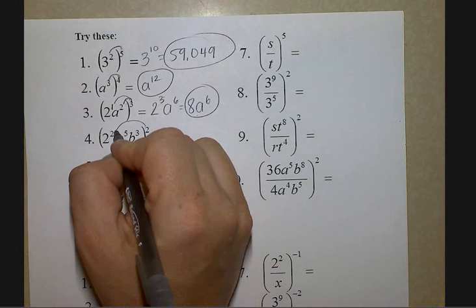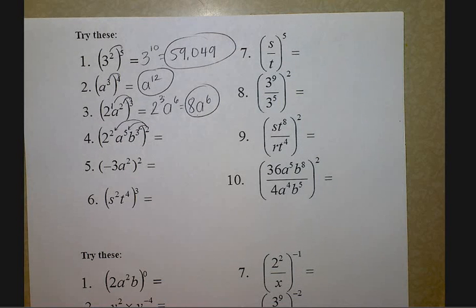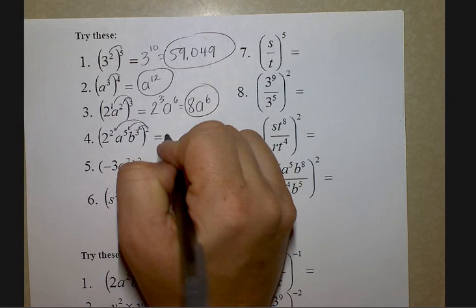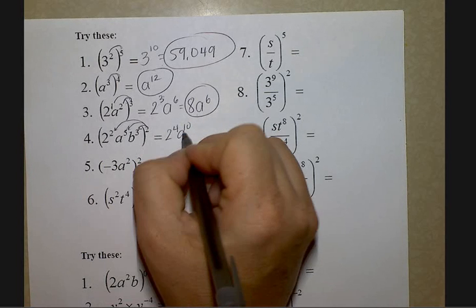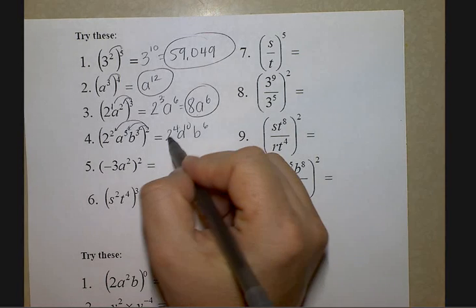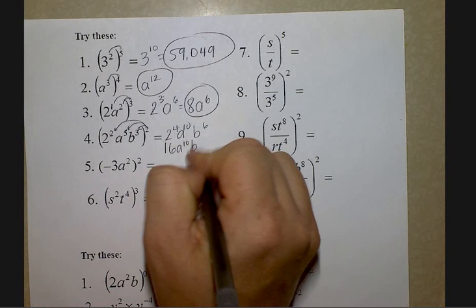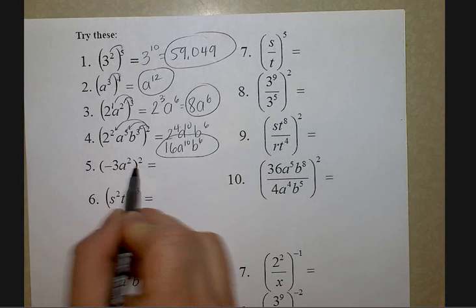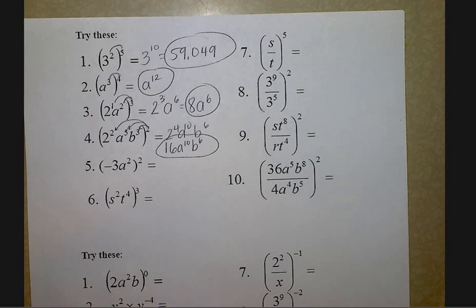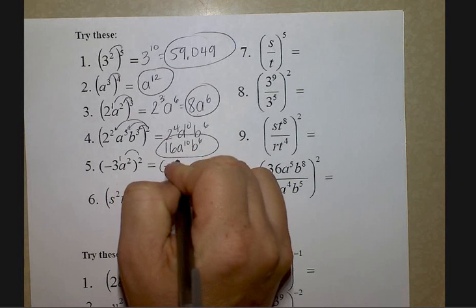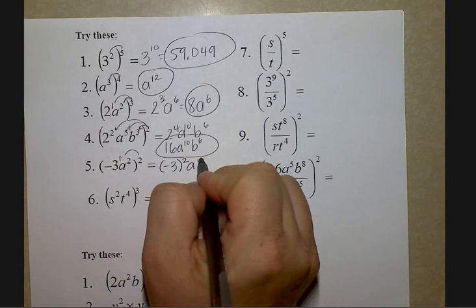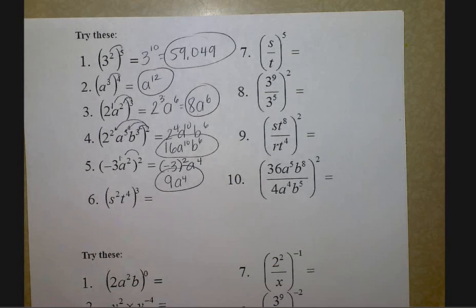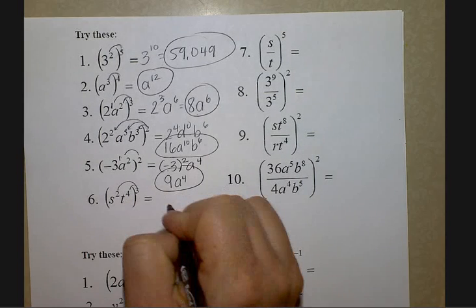I'm going to distribute the 2 to the exponents — power of a product. You don't have to memorize the words, just know the actions. When you distribute, you multiply: 2 times 2 is 4, 2 times 5 is 10, 2 times 3 is 6. Two to the fourth is 2×2×2×2 which is 16; 8 to the tenth, b to the sixth. This gets trickier — notice it's in parentheses, it makes a difference. The hidden exponent on negative 3 is 1; distribute to get negative 3 to the second — keep it in parentheses — and a to the fourth. Negative 3 times negative 3 is 9, a to the fourth. Distribute: s to the sixth, t to the twelfth.